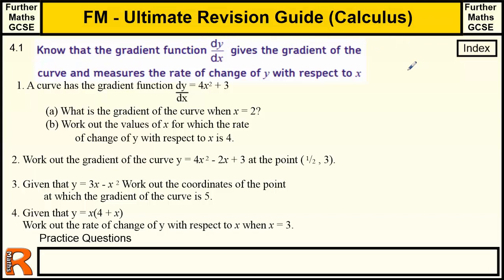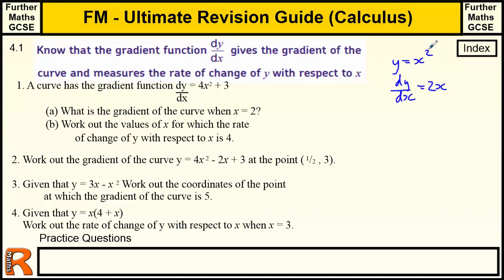So if we have, for example, y equals x squared and we differentiate, we get dy by dx. We take the 2 down and we get x to the power of 1, which is just x, so we get 2x. This function is the gradient function of the curve y equals x squared.